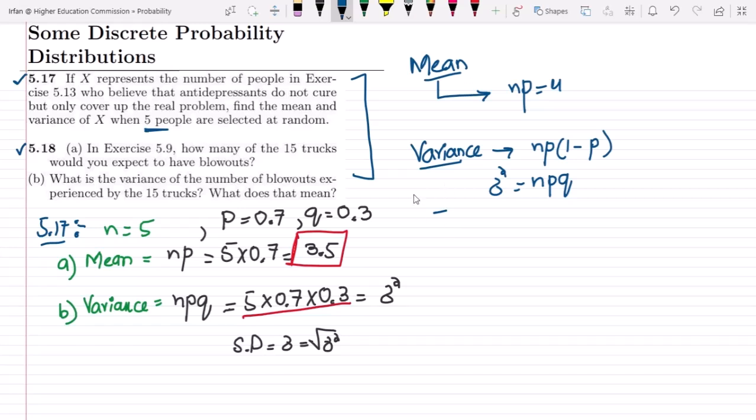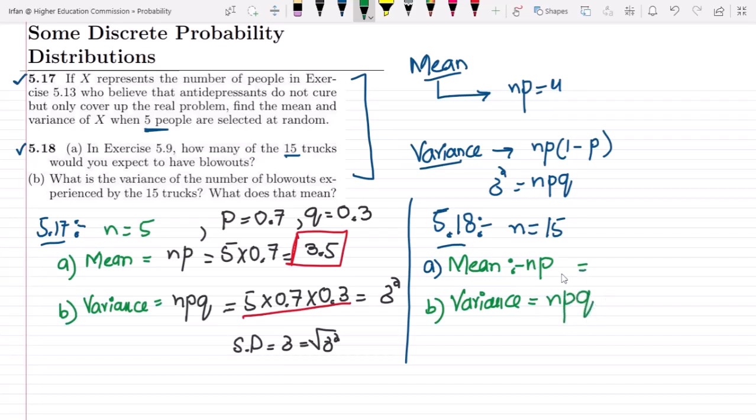So here it is very clear that in question 5.18 the number of items here are basically 15. And in order to find the mean of it, this is part a, we know that mean is np. And b is for variance, and the formula for variance will remain the same and that is npq. In question 5.9 let us see the value of p which is not known here. So let us move to question 5.9.